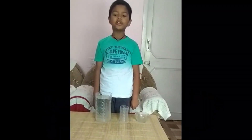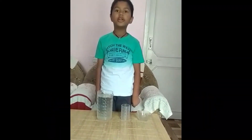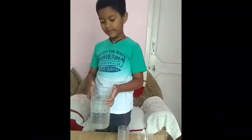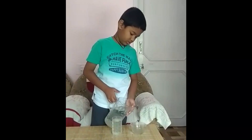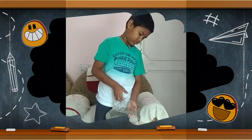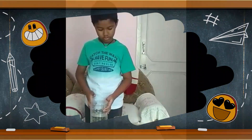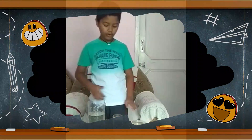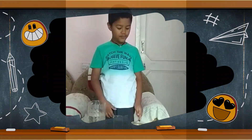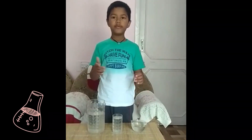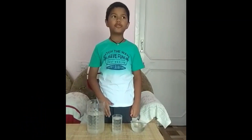Today I am going to do an activity to show that liquids do not have a definite shape. It takes the shape of the container. For this activity I am taking a jug filled with water. Water in the glass takes a glass shape. Water in the bowl takes a bowl shape. This shows that liquids do not have a definite shape and take the shape of their container.